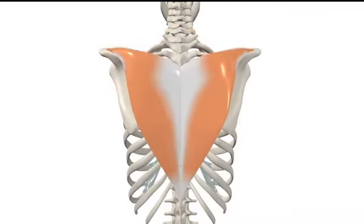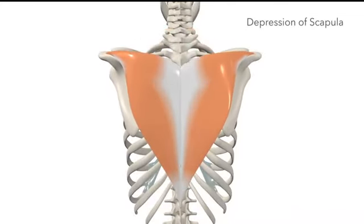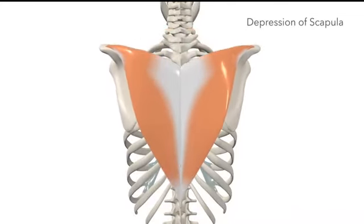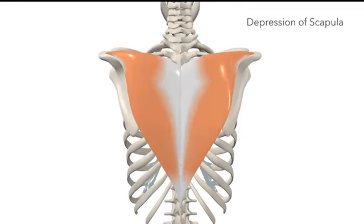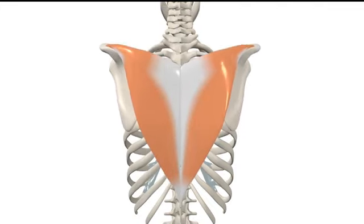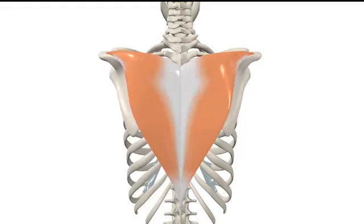The lower fibres depress the scapula. For example, when you're pushing yourself up out of a chair, the lower fibres of the trapezius contract to pull the scapula down.